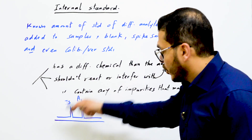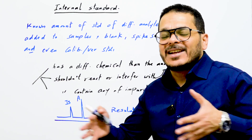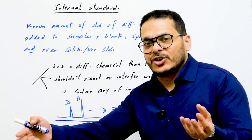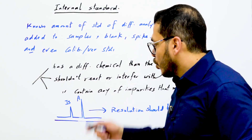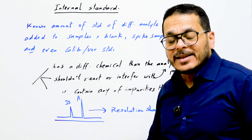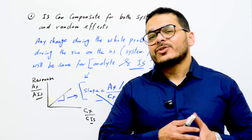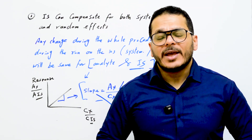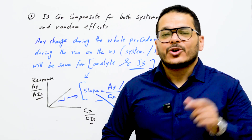As you can see in this chromatogram, resolution should be very high — there should be a high separation or resolution between the internal standard and the analyte of interest, so they can be easily distinguished from each other. The internal standard should also remain constant during the whole procedure and whole run, and will not be affected by any solvent or other chemical added. The internal standard is specific for each compound or group of compounds.